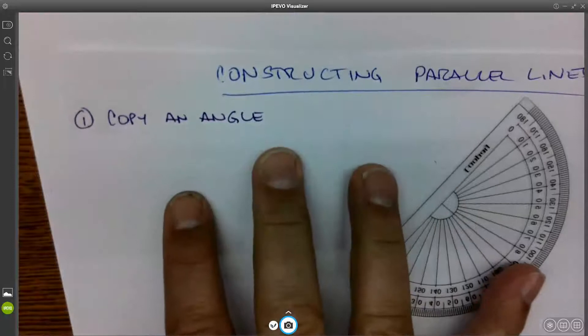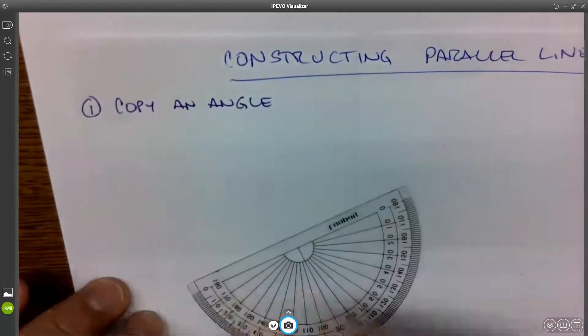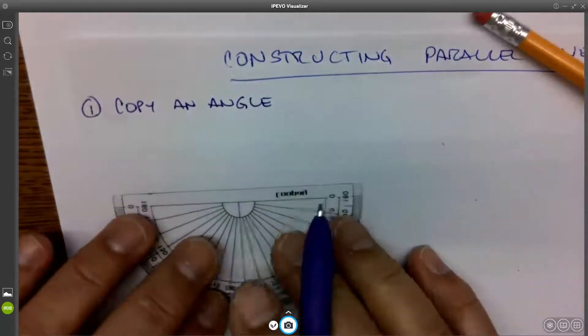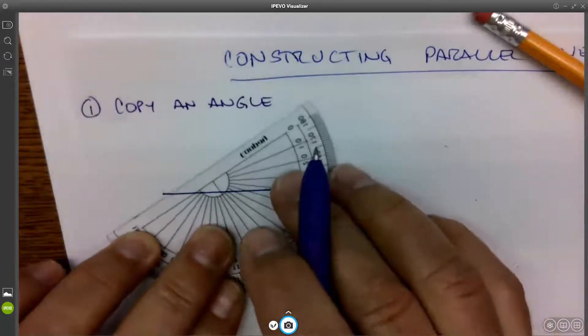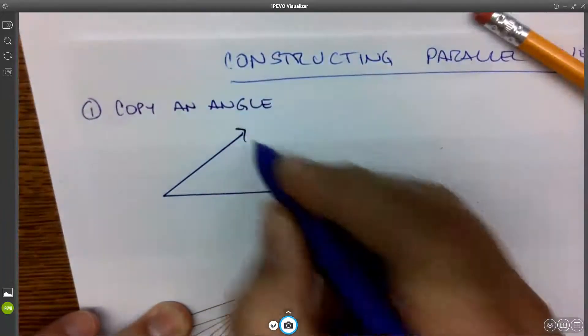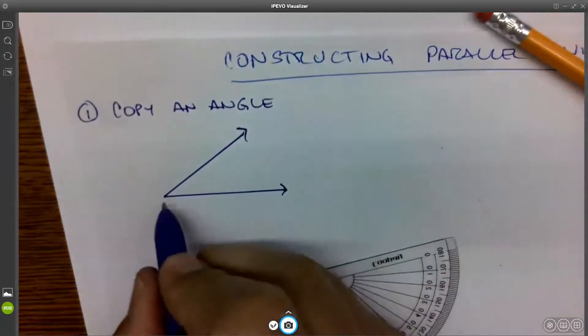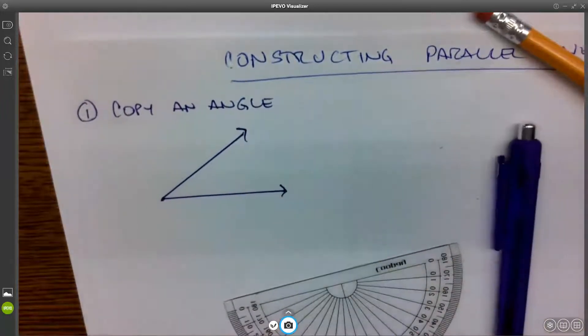I'd like to first make sure we know how to copy an angle. This is a skill we did before, but we're going to do it again. In order to copy an angle, we have to, of course, start with an angle. An angle is two rays with a common end point. Everybody, please draw yourselves an angle.